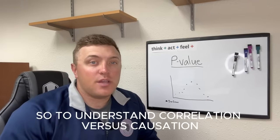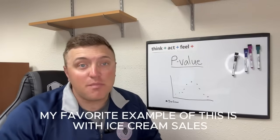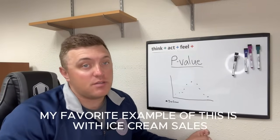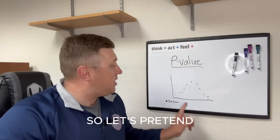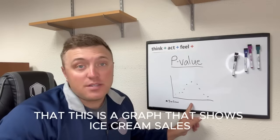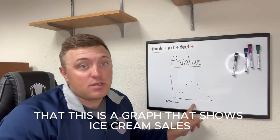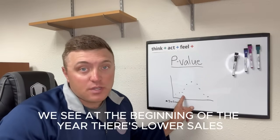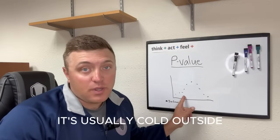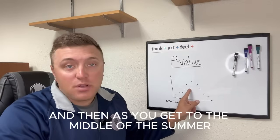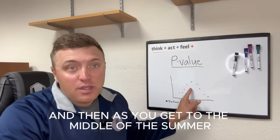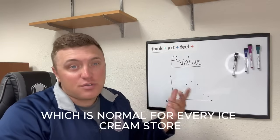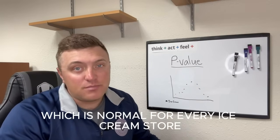To understand correlation versus causation, my favorite example is with ice cream sales. Let's pretend that this is a graph showing ice cream sales. We see at the beginning of the year there's lower sales — it's usually cold outside — and then as you get to the middle of summer, sales go up, which is normal for every ice cream store.